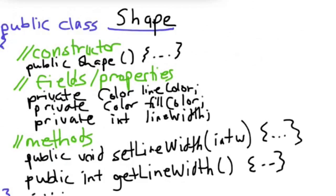There'd actually be a whole bunch of other methods. We'd have getters and setters for the fill color and the line color, and possibly some other methods in shape. But I'm not going to draw them all out here. What's interesting now is that we can actually subclass this. So let's see what that looks like.